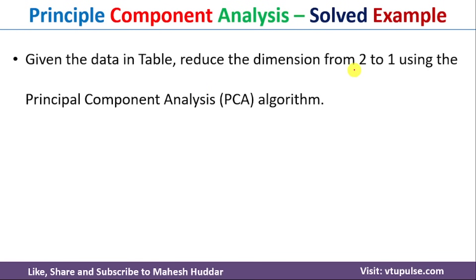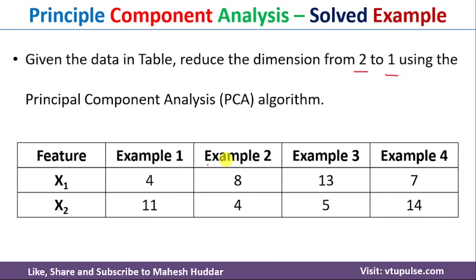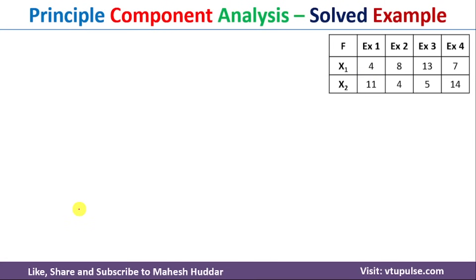In this case, we have been given a dataset with two features, and we want to reduce the dataset from two dimensional to one dimension. The dataset contains four examples, and x1 and x2 are the two features. Given this particular dataset, in principal component analysis, we need to apply multiple steps.